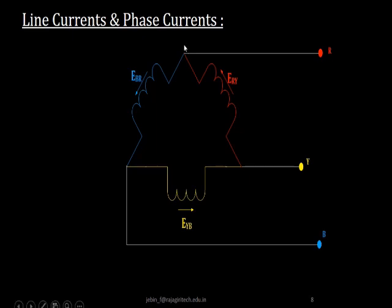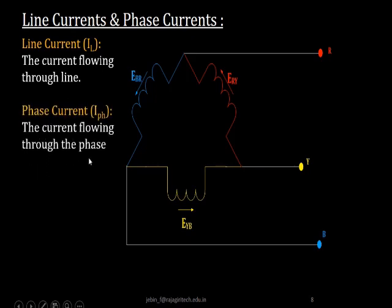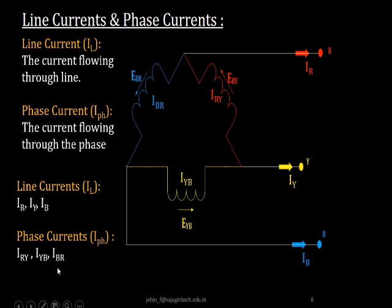Now we are going to define the line currents and phase currents of a balanced delta connected source. A line current is defined as a current flowing through the line, and the phase current is defined as a current flowing through the phase. IR, IY and IB represent the line currents. IRY, IYB and IBR represent the phase currents. The direction of phase currents is also represented in the figure — IRY passes through the first phase, IYB through the next, and IBR through the third phase.